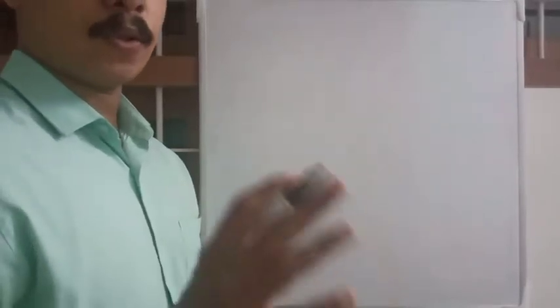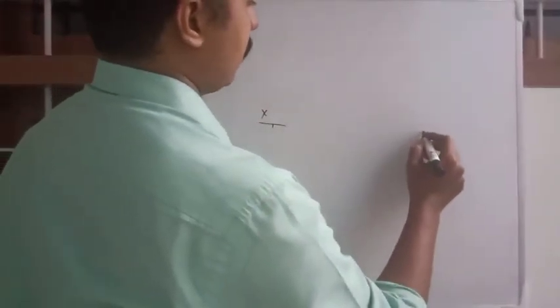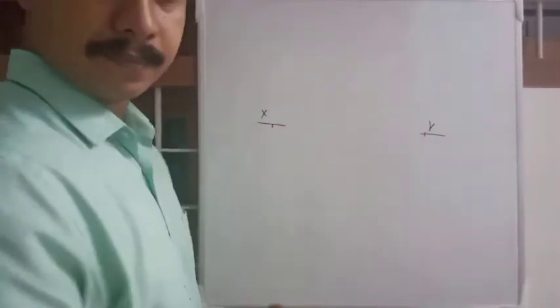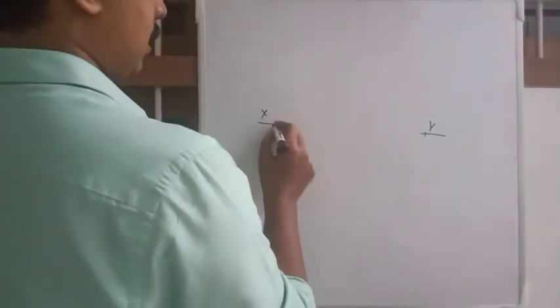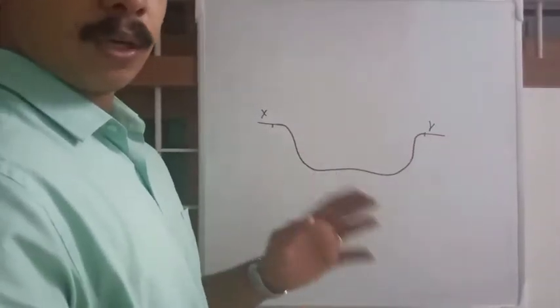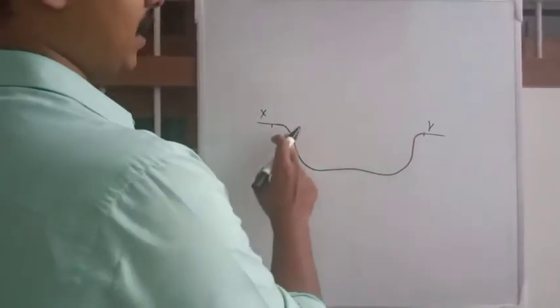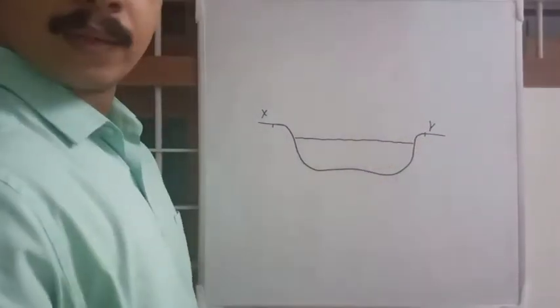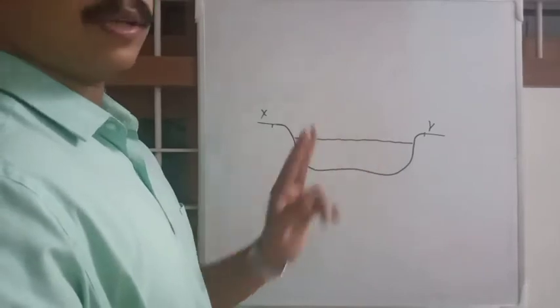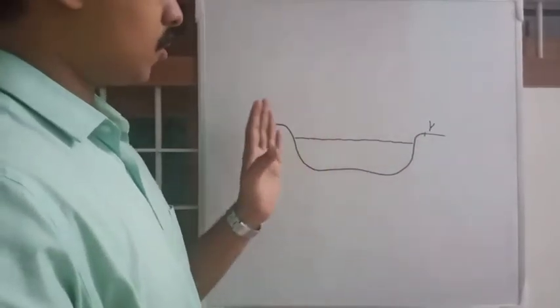Welcome back. Today we are going to find out a solution for a particular problem: to find out the level difference between two stations — station X and station Y. There is one extra condition: the distance between X and Y is particularly large, maybe 100 to 200 meters, but you cannot place an intermediate instrument or dumpy level between X and Y. This may be a river or a valley — you cannot place a dumpy level or leveling staff in that portion.